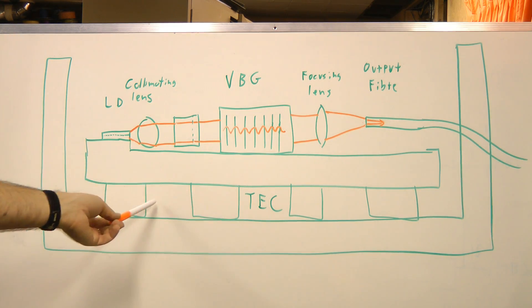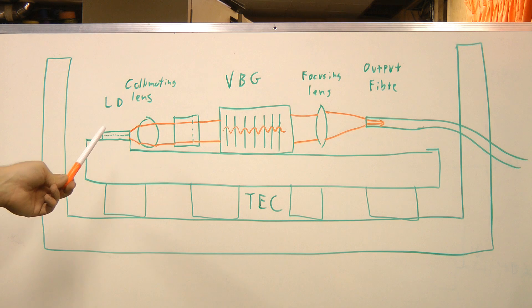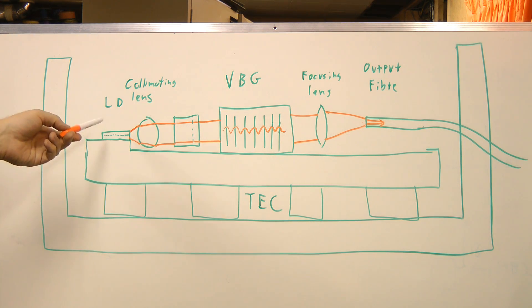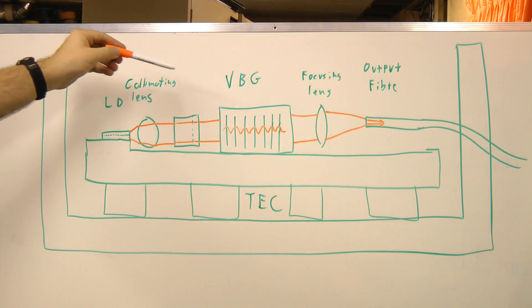The entire module sits on a thermoelectric cooler that's used to stabilize the temperature of the entire setup, because as the temperature varies, it tends to cause the wavelength to vary because the grating expands and contracts, and the optics move around.